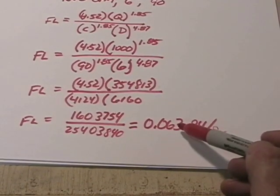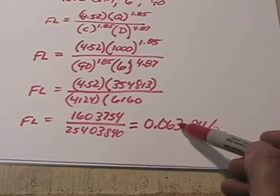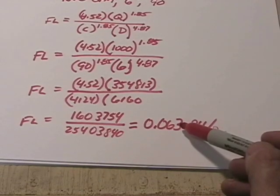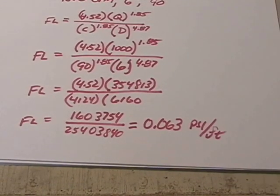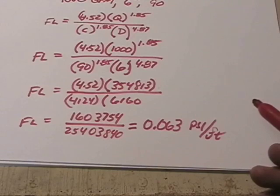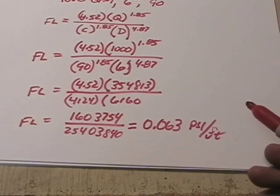So for every foot of 6-inch water main we have with a C factor of 90 flowing 1,000 gallons per minute, we're going to lose 0.063 psi per foot.